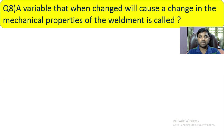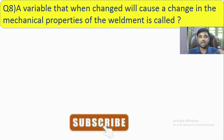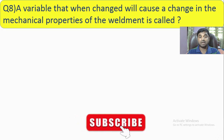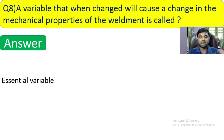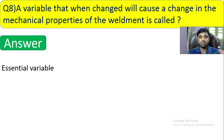Question number 8: A variable that when changed will cause a change in the mechanical properties of the weldment is called what? The answer is essential variable. If you change an essential variable, you definitely need to revise the WPS.